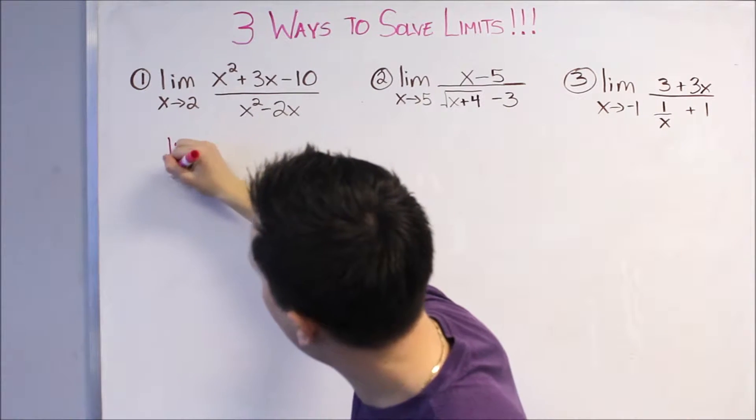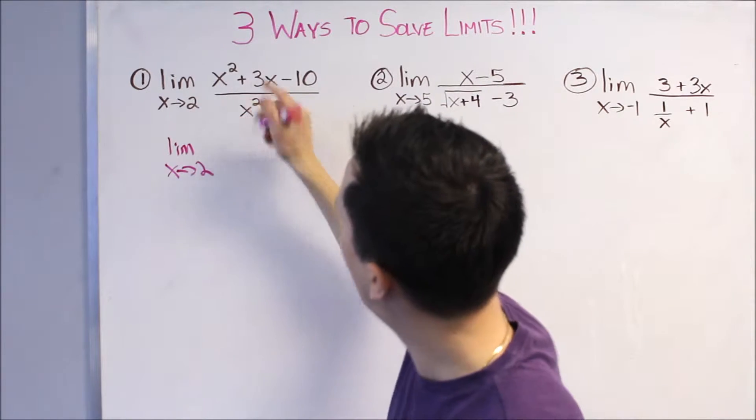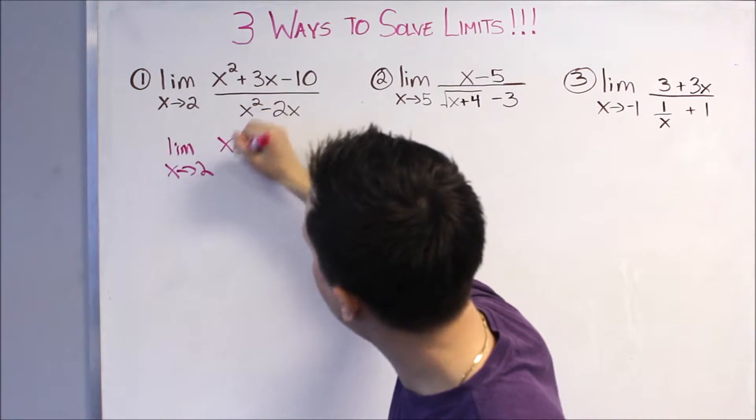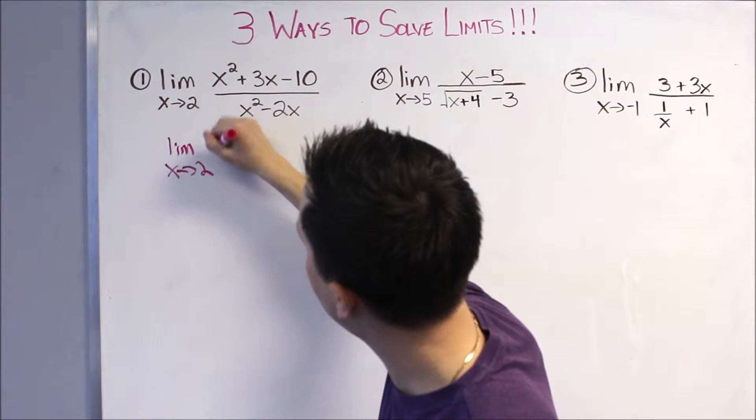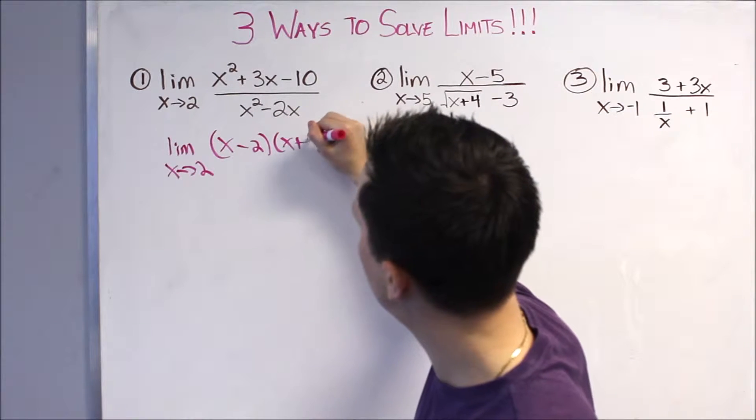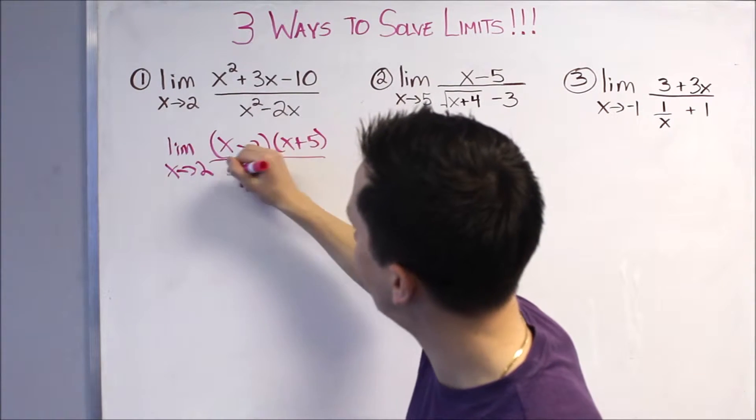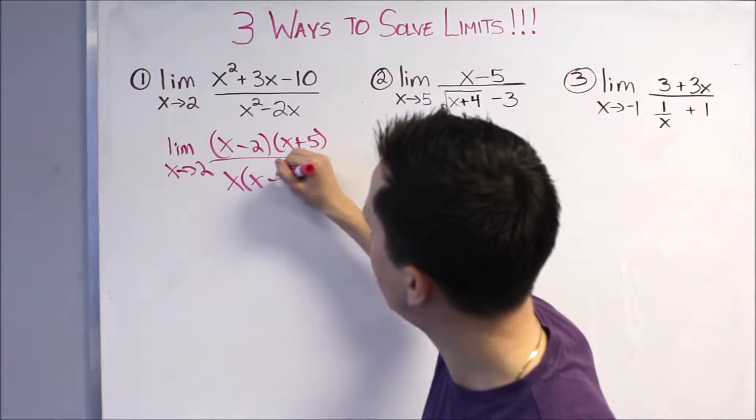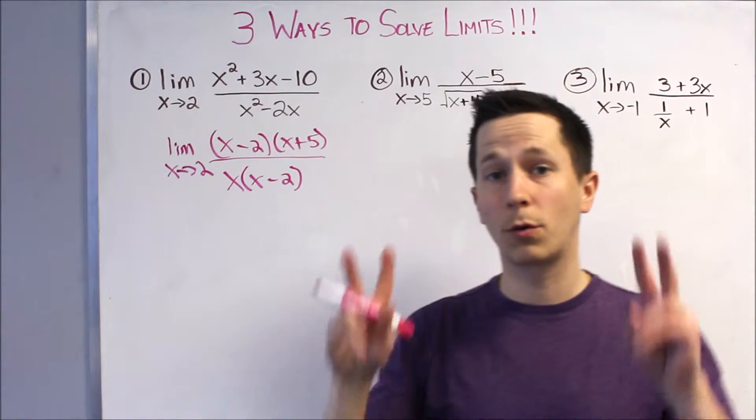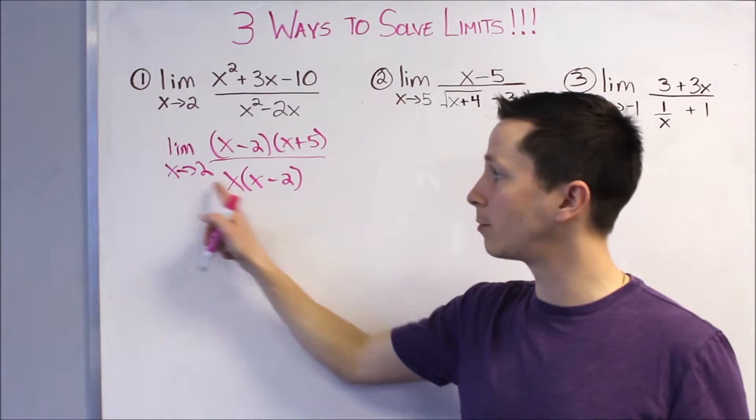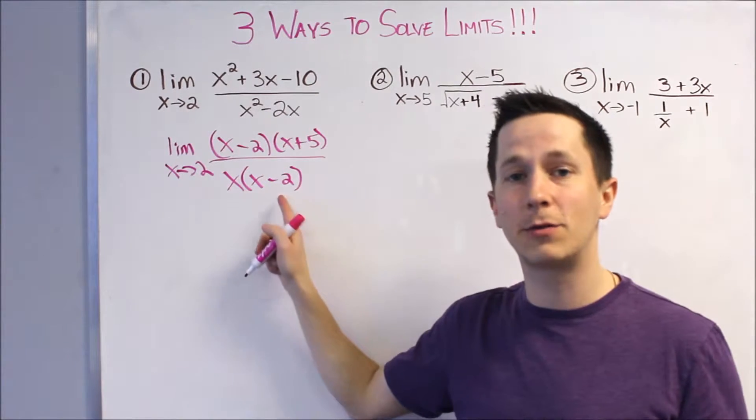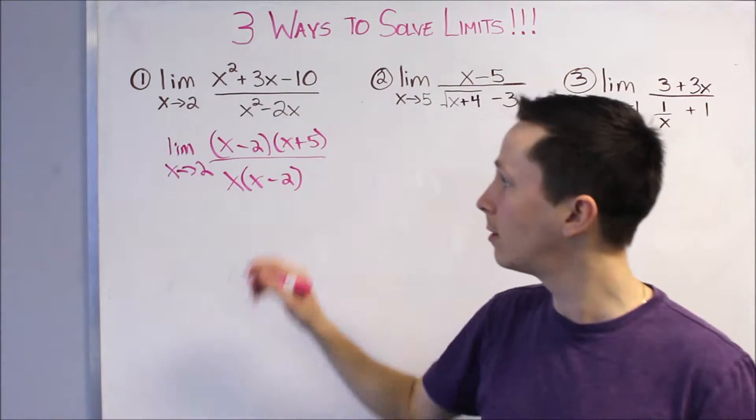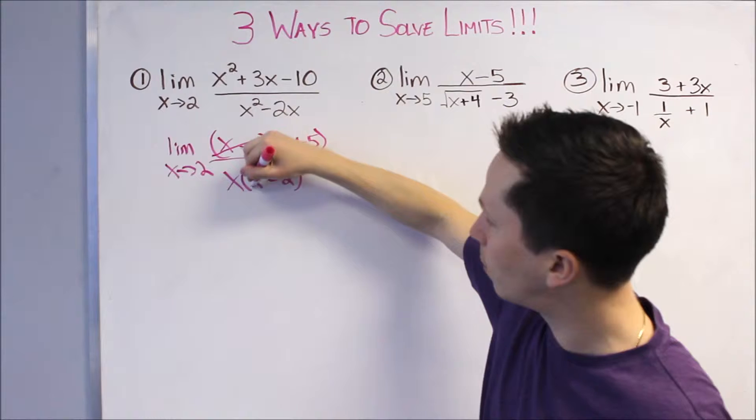Make sure we write limit each time. X goes to 2. This top factors into X minus 2 and X plus 5. The bottom, you can factor an X out and you're left with X minus 2. Now, it's very clear what the problem is. Remember, X is approaching 2, so this X minus 2 is the thing that's really driving it to zero. We can now cancel this with the one on top.